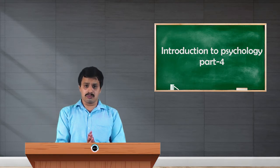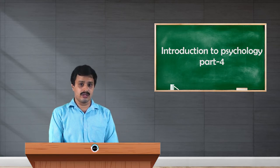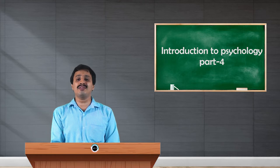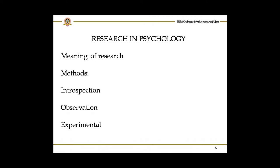Before conducting the experiment, the experimenter has to take certain precautionary methods so that he can control other intervening variables or extraneous variables. To conduct an experiment, one has to have a particular independent variable and dependent variable. Any variable which is manipulated by the experimenter is called independent variable. Any variable which is elicited as a result of the introduction of the independent variable is called dependent variable.